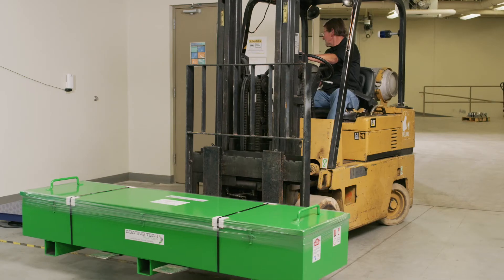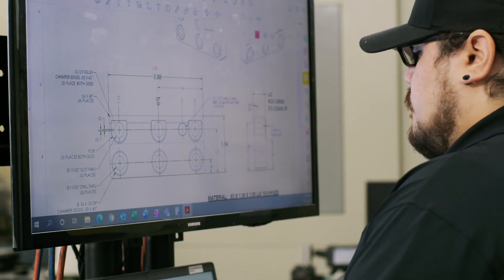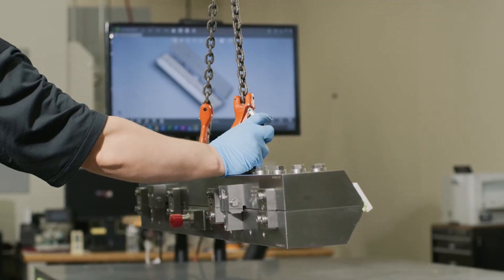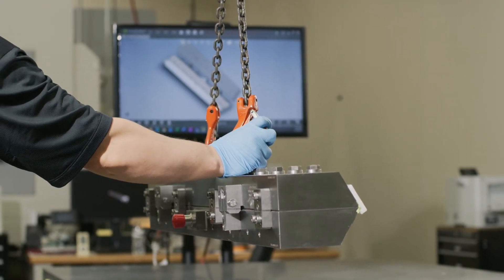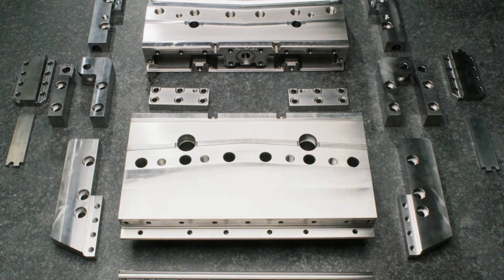When we manufacture a slot die for a customer, the cost takes into consideration the precision engineering, the precision manufacturing, and the cost of the base material. Now any machine shop can manufacture something that looks like a slot die for a fraction of the cost, but the performance is not going to be the same.